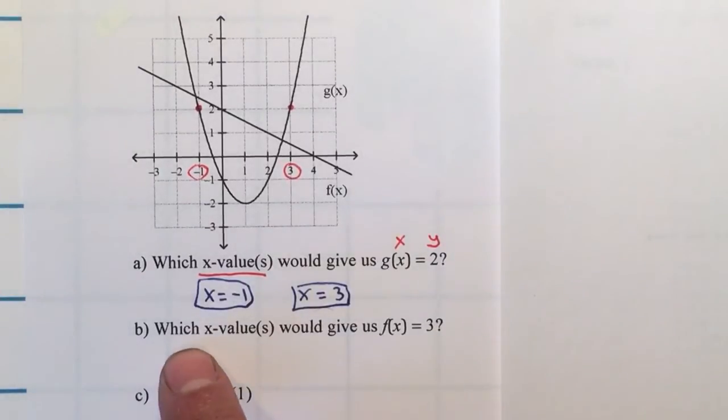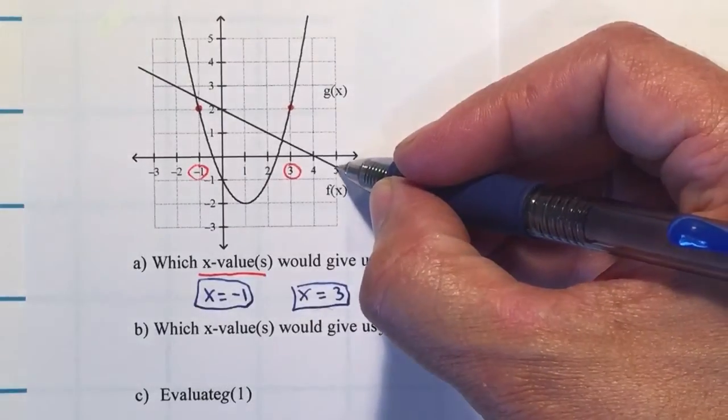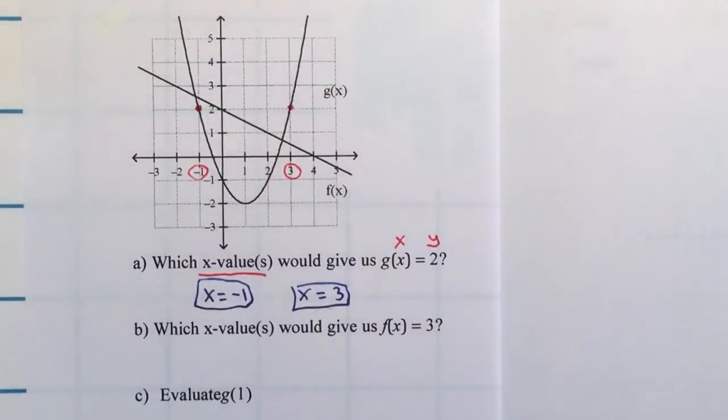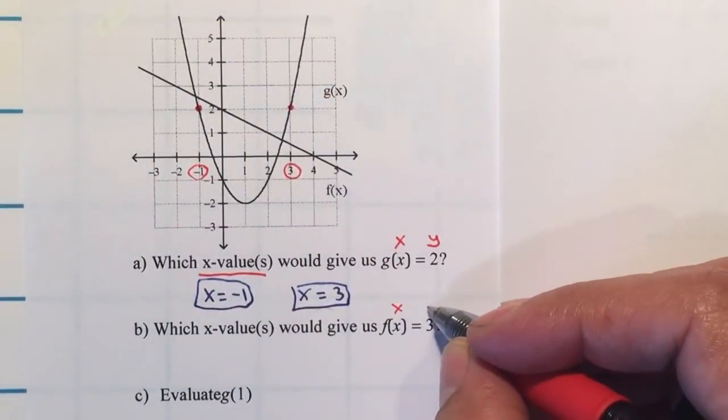Letter b, for which value or values will give us f of x equal to 3? This is your f function. So this is your x and that's what we're looking for. They're giving you the y.